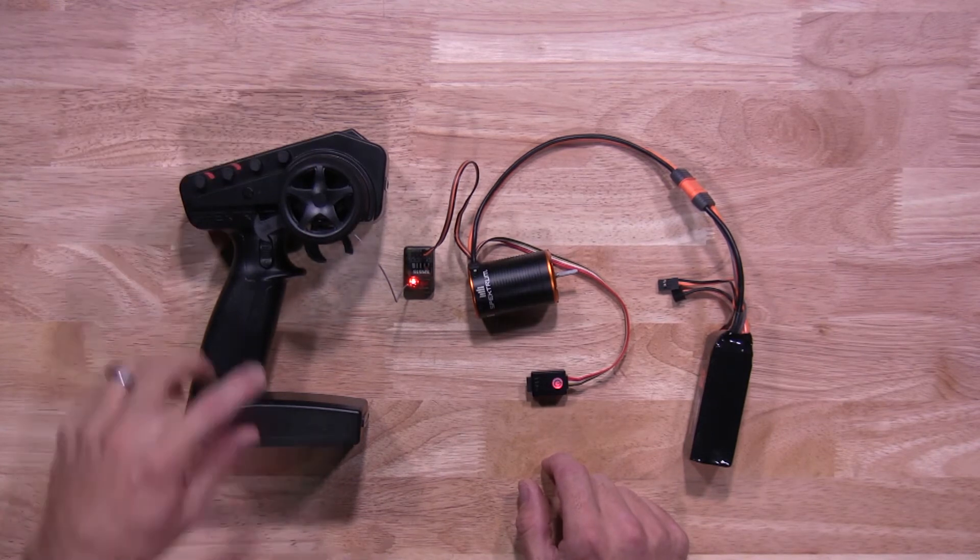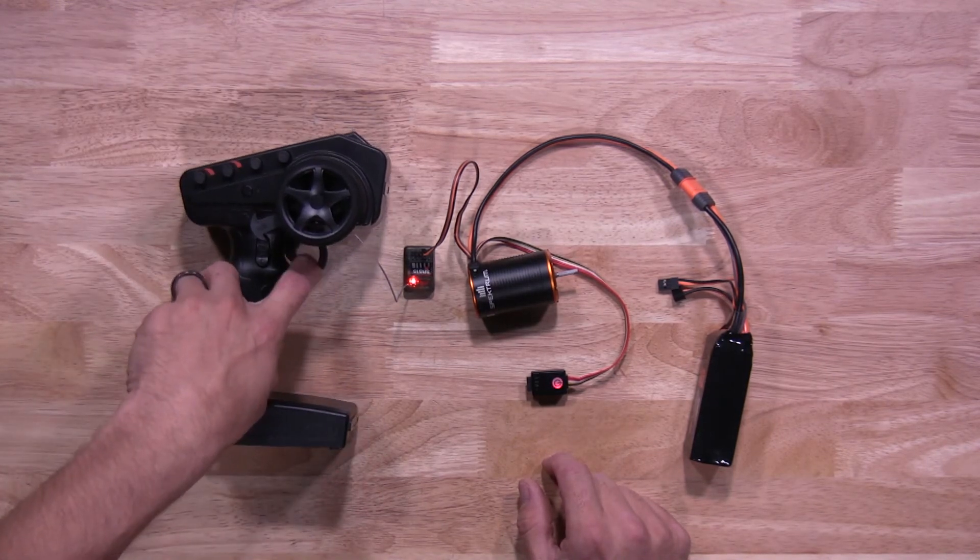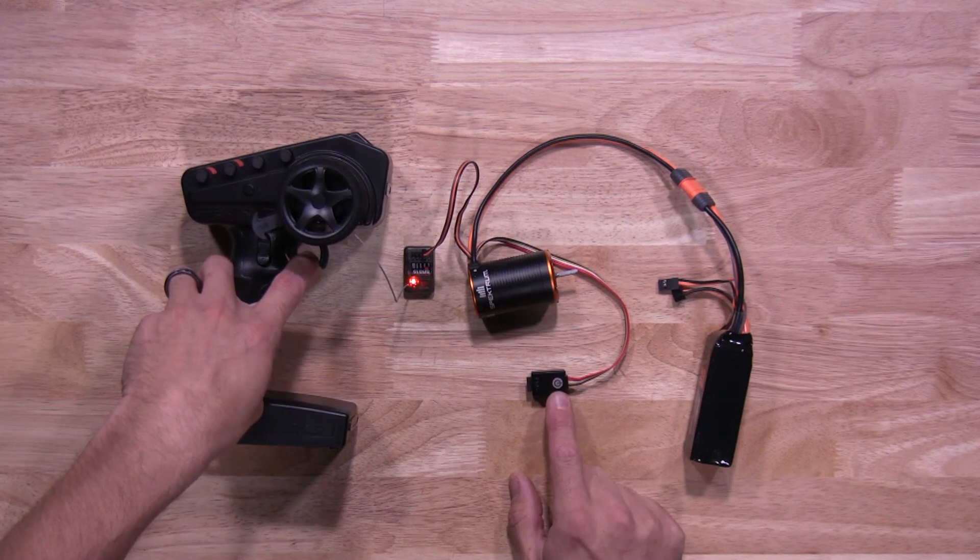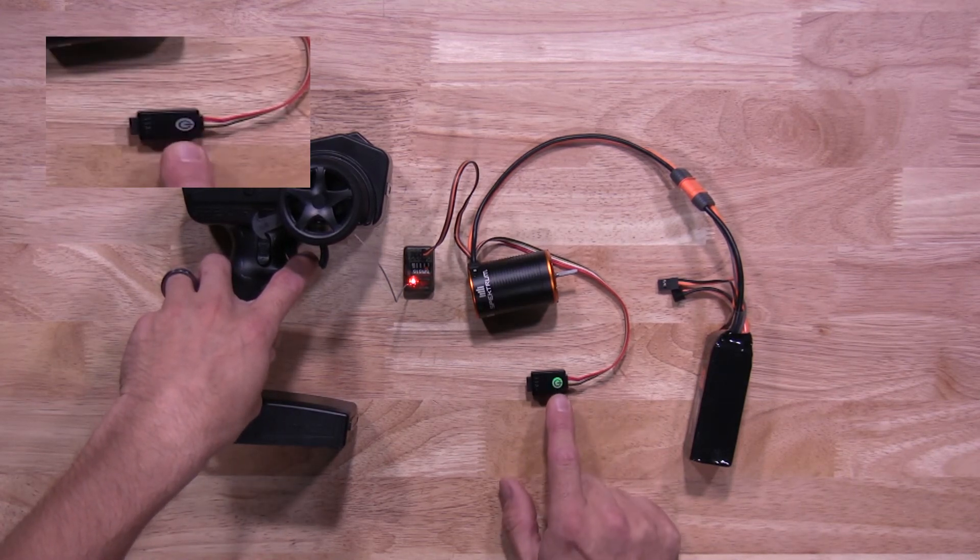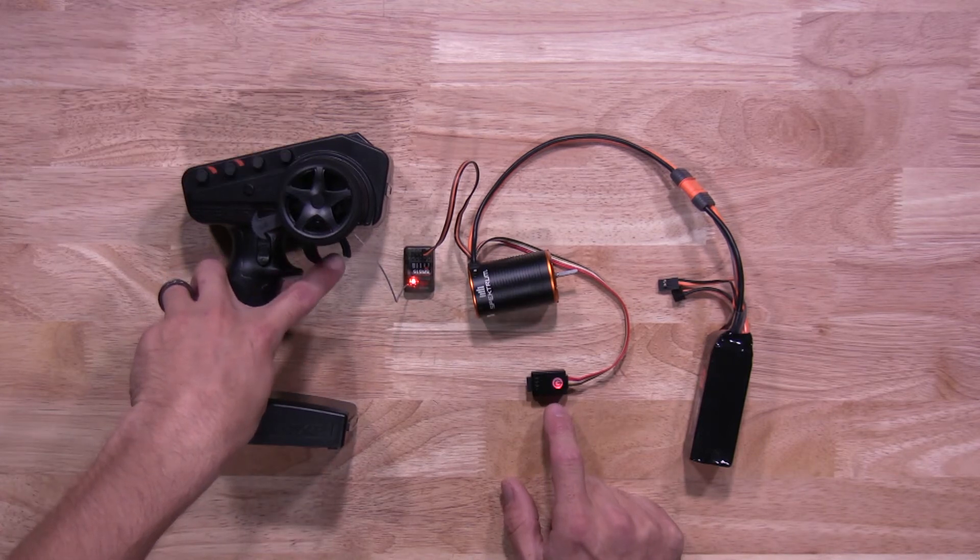Now we're doing full throttle. So hold full throttle down on your transmitter. You're gonna hit the on-off button one time. You'll see two green flashing lights to let you know that setting has been saved. You'll let go of your full throttle.